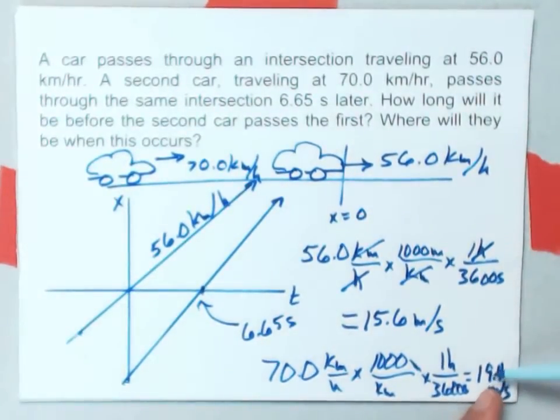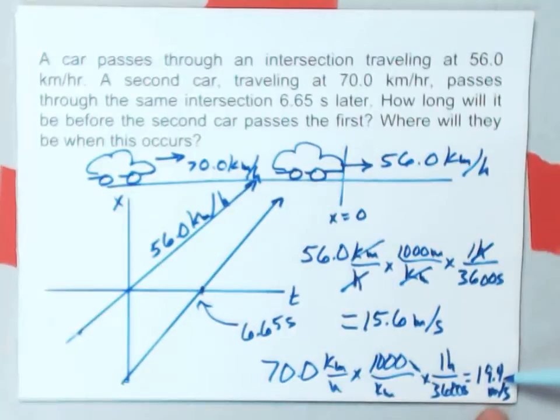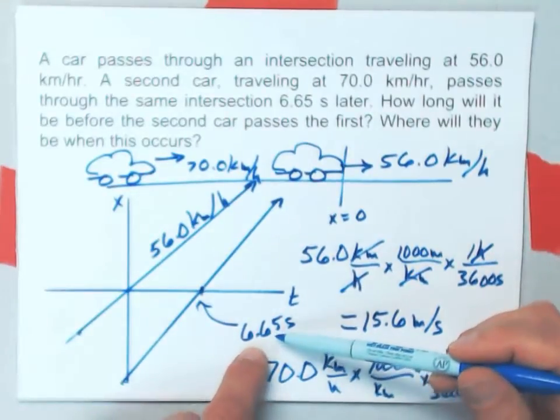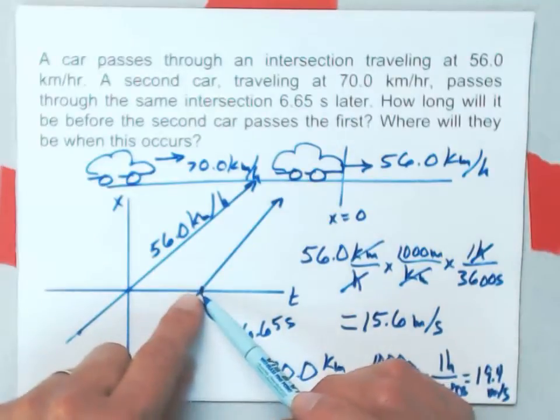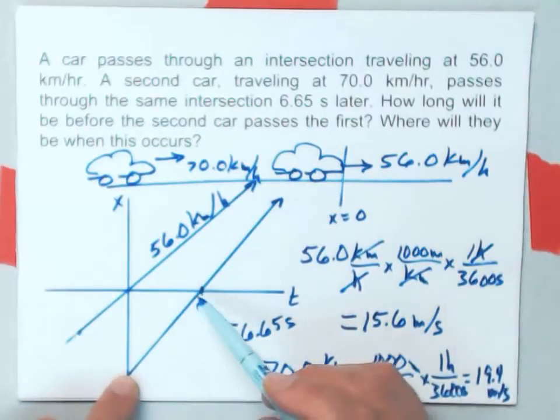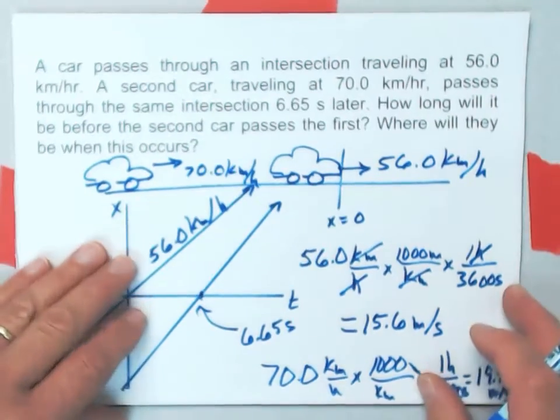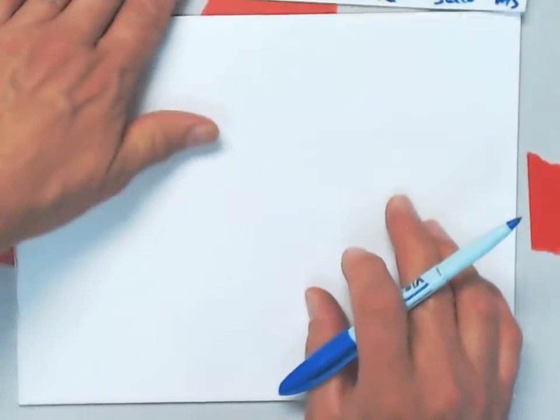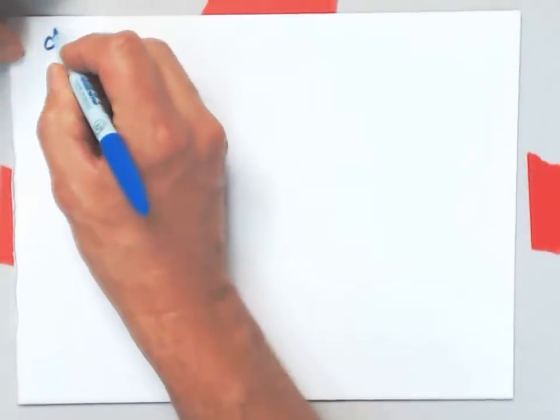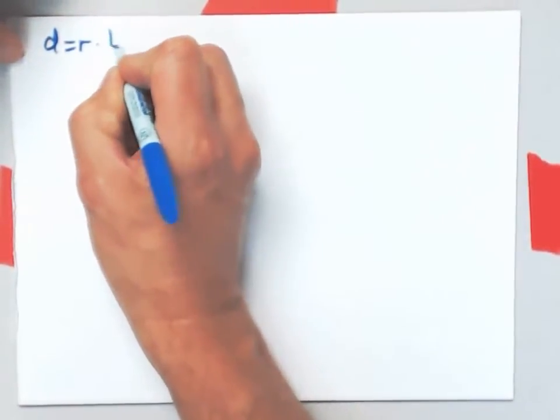Now, if the faster car is going that fast, and it was traveling for 6.65 seconds before it gets to the intersection, I can just multiply these two things together to figure out how far back it was. And what I'm using on this calculation is just the distance equals rate times time equation.